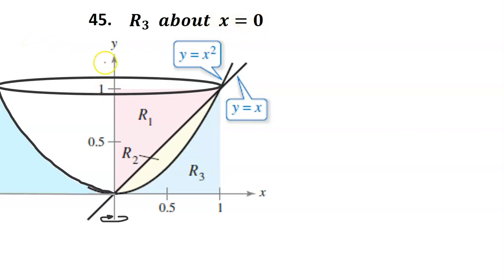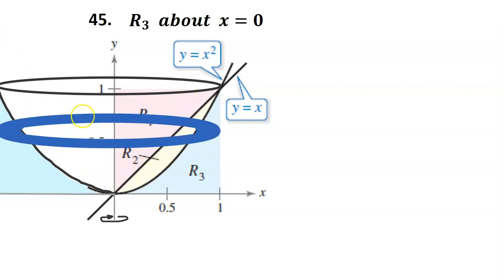The line x equals 0 is the y-axis, and when you rotate the blue region around the y-axis, you get a solid that's like a cylinder with a bowl carved out of the top of it. A washer is a disc with a hole in it, and that's what you get when you take a slice of this solid. We can use washers like this one to calculate the volume of the solid by integrating or adding the washers to form the volume. Because the washers are stacked vertically, ultimately we will have to integrate with respect to y.